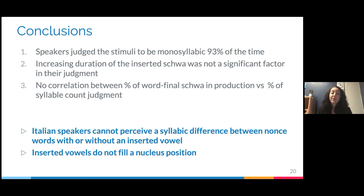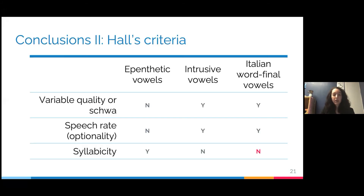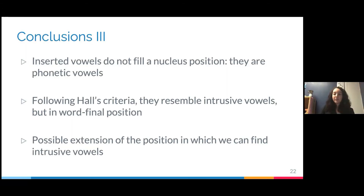What we found is that speakers judged stimuli to be monosyllabic 93% of the time. The increasing duration of the inserted schwa was not a significant factor in their judgment, and there was no correlation between the percentage of word-final schwa production and their syllable count judgment. From this, we can assume that Italian speakers cannot perceive a syllabic difference between nonce words that have a schwa at the end and those that don't. Since they perceive this as monosyllabic, inserted vowels do not fill a nucleus position. Comparing with Hall's criteria, if Italian word-final vowels are not syllabic, they actually resemble intrusive vowels.